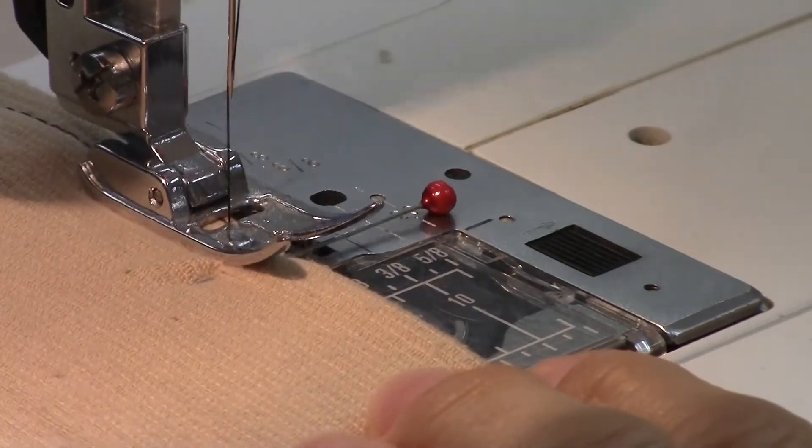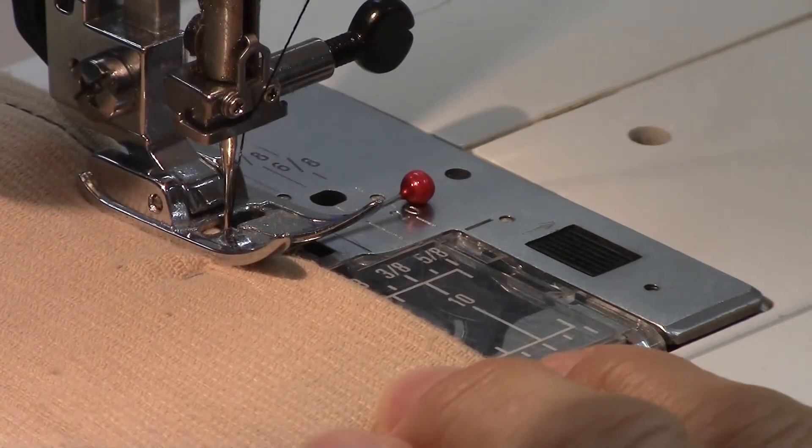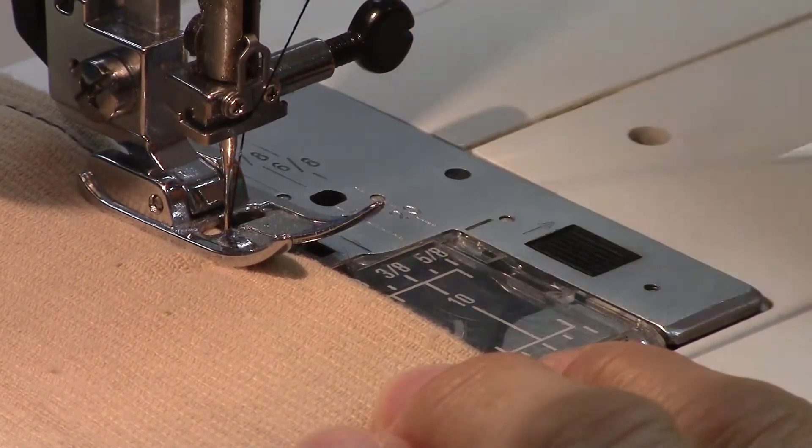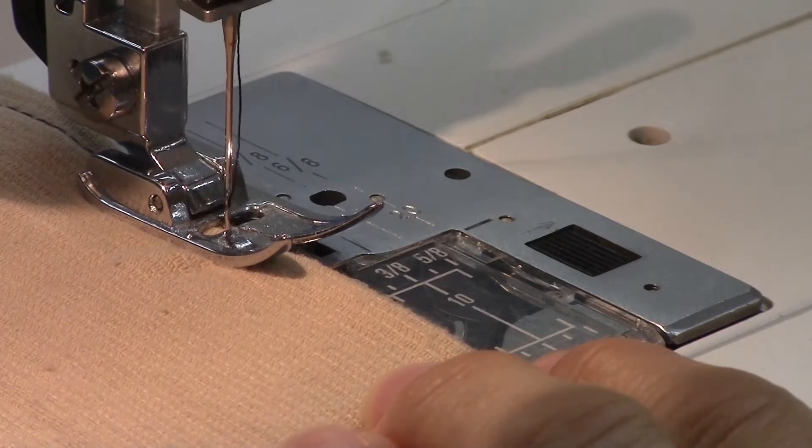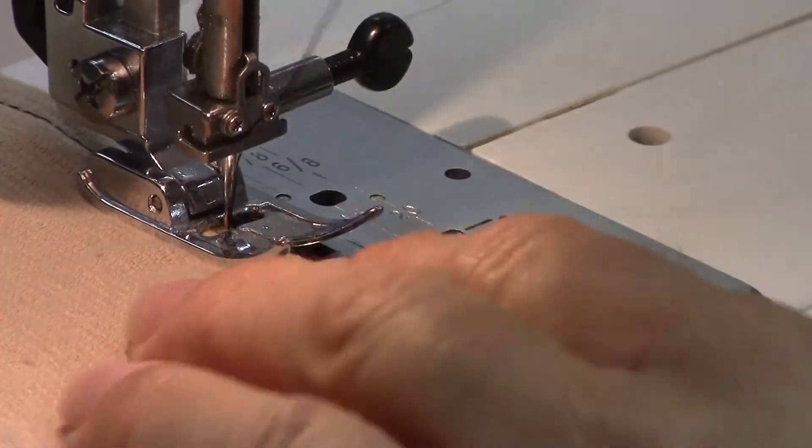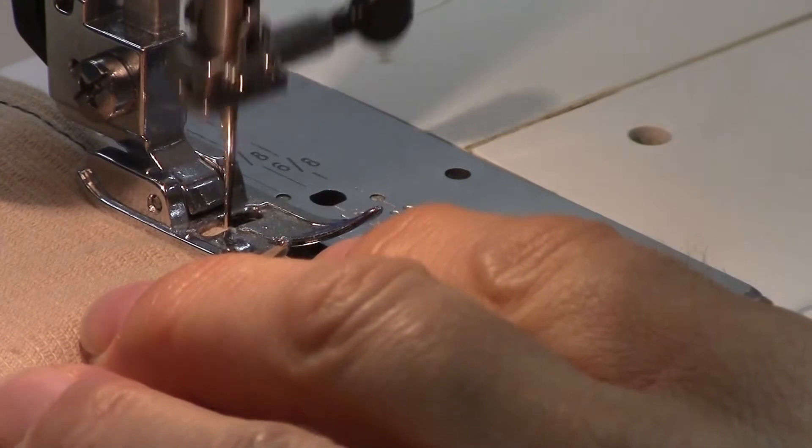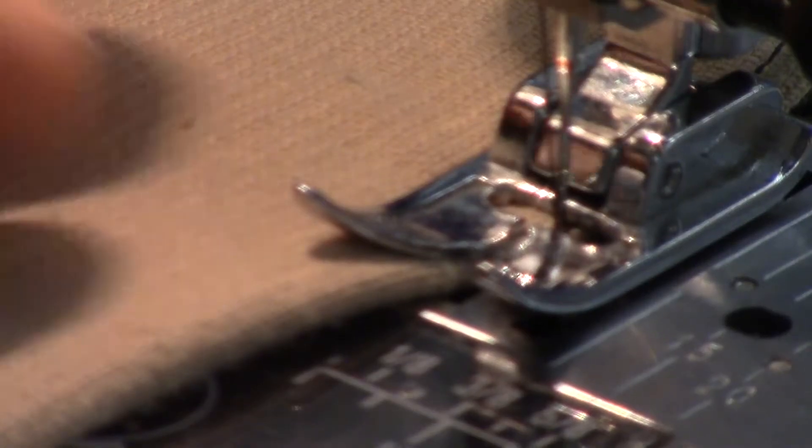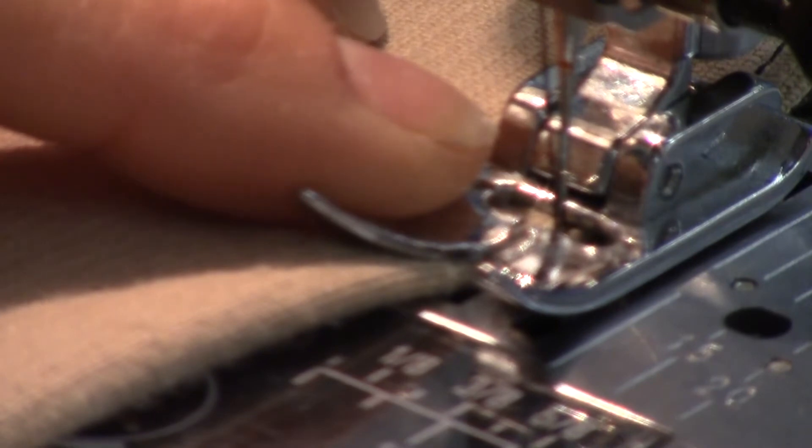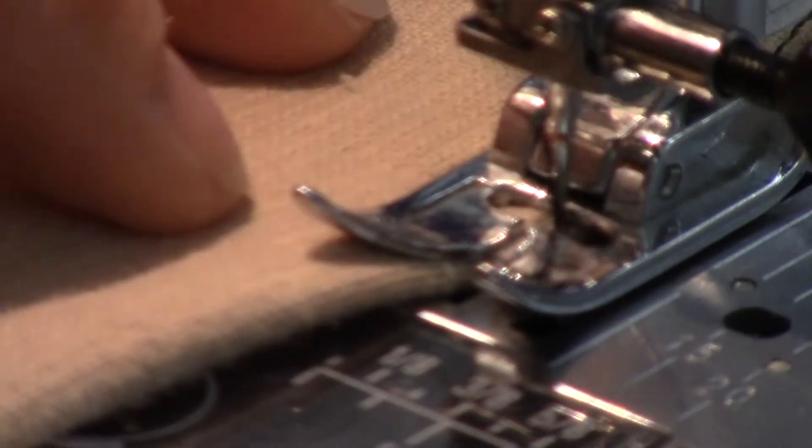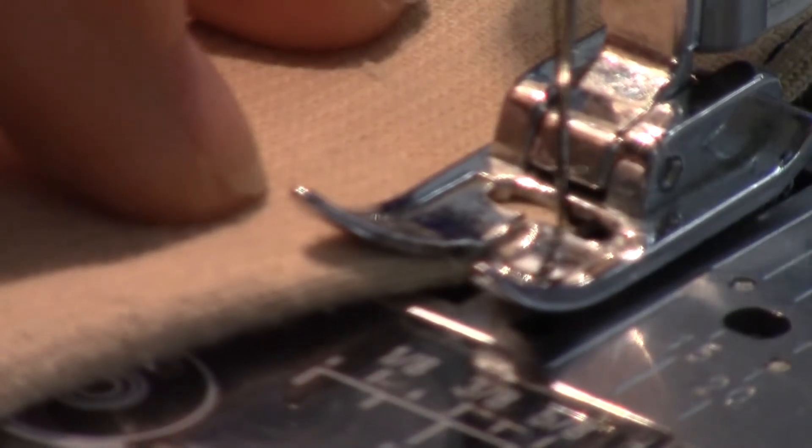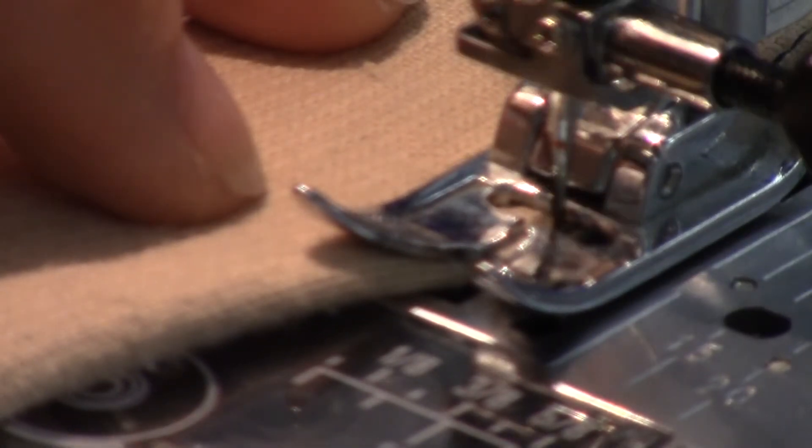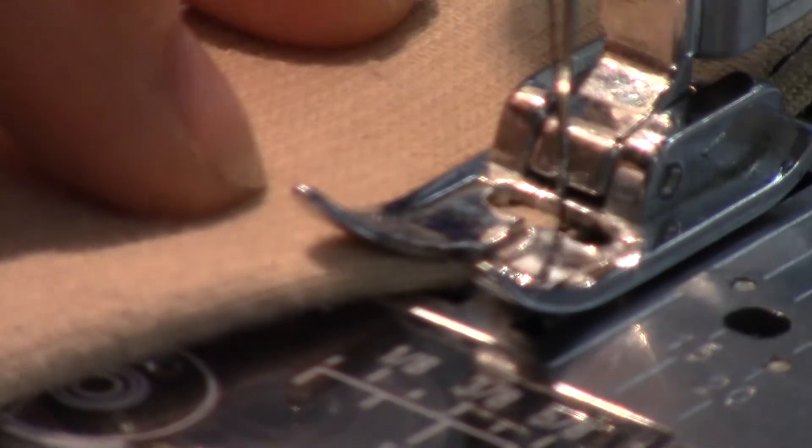And I'm going to want to reduce my stitch length to about a one. So here you can see it is right along that fold line so I'm going to go one more. Right in there and now I'm going to come off.